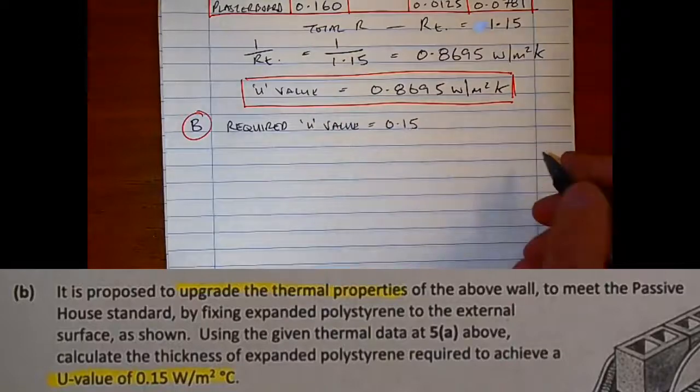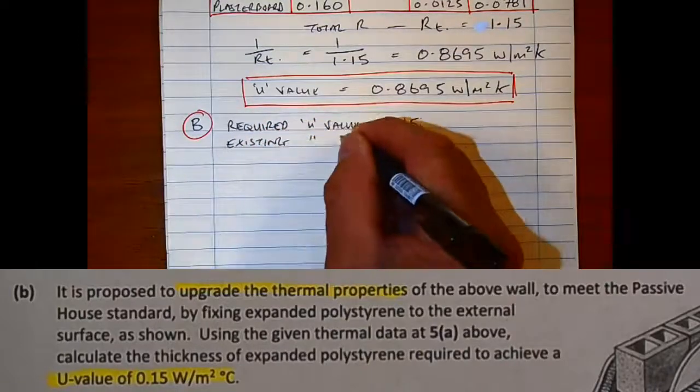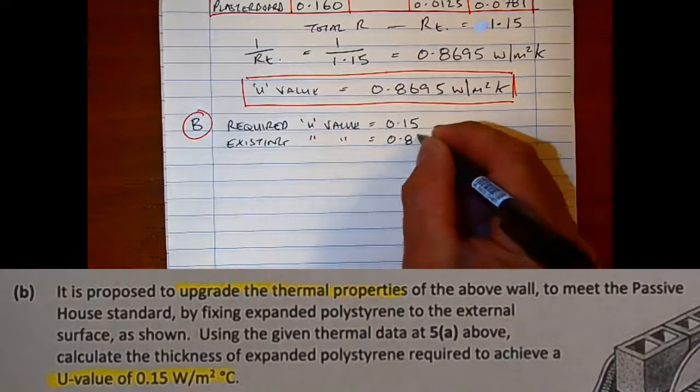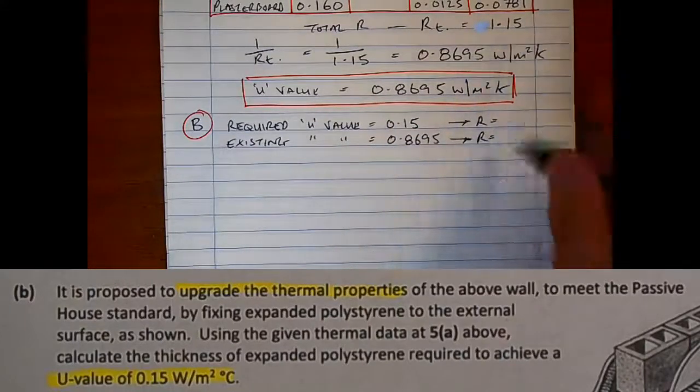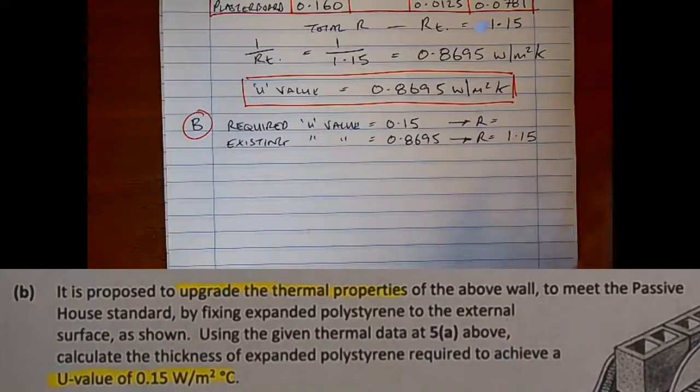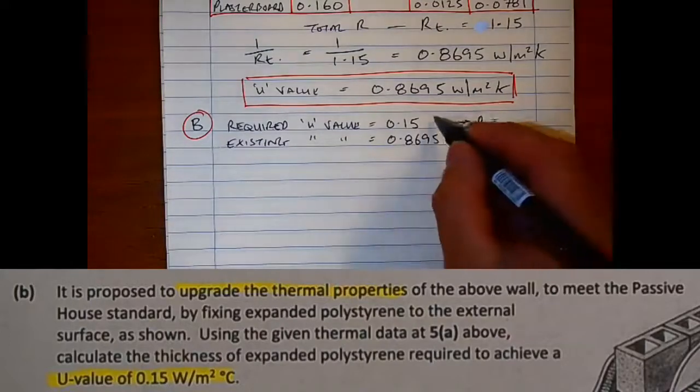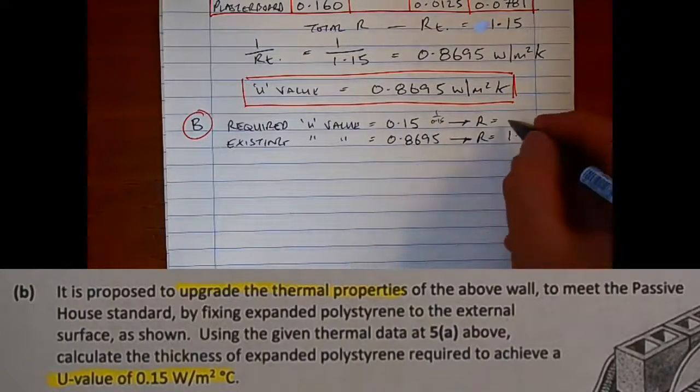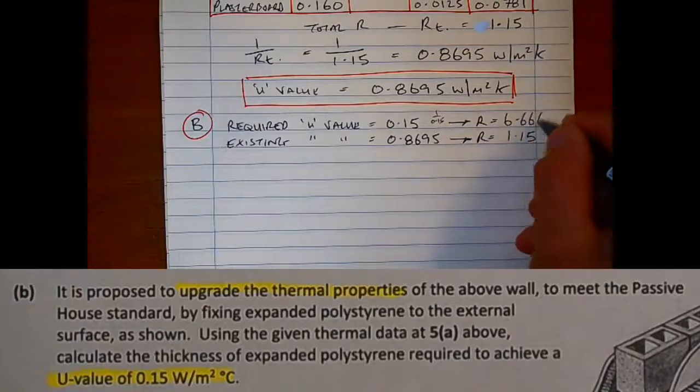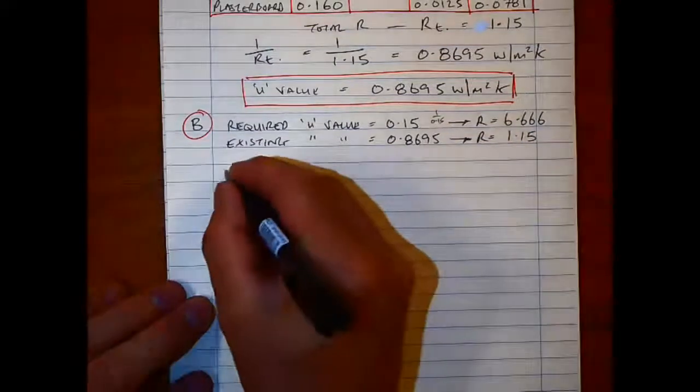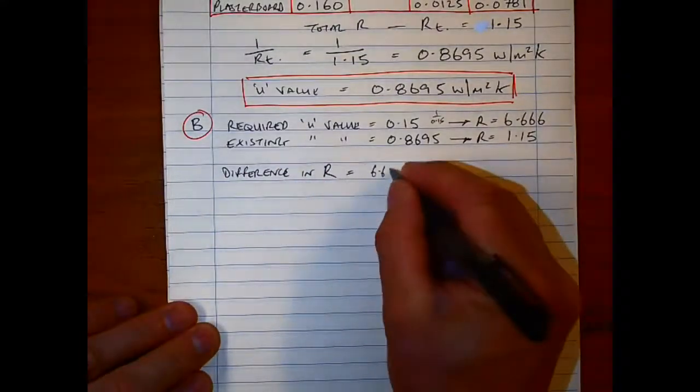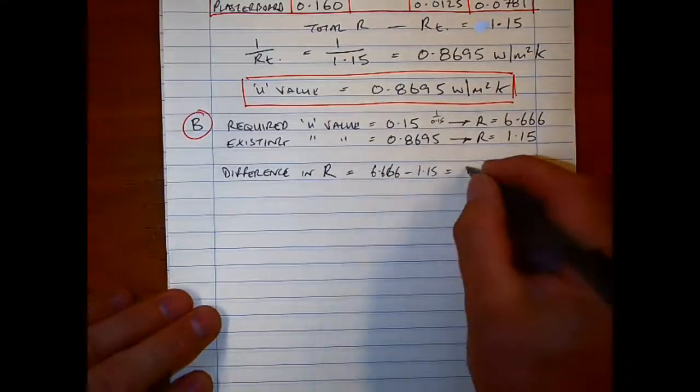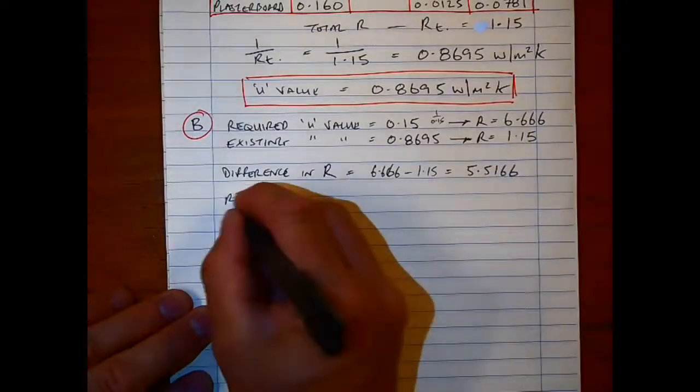For the B part of the question, we were given a new U-value. It's proposed to upgrade the wall, and you can see it here, by adding on insulation. All I'm writing down is the two U-values: the one that we calculated, and then the one that we're actually looking to achieve. We can go back a step to the resistivity or the resistance, and we have it from the table before. To work out what the resistance is for 0.15, just put 1 over it, and it gives us 6.666.